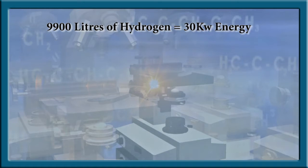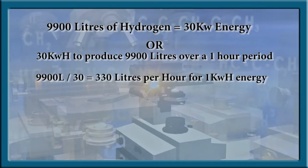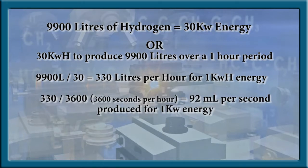With an energy efficiency of 1 to 1, or 100%, it would require 30 kilowatt-hours to produce 9900 liters of hydrogen. Therefore, divide 9900 by 30, and we conclude that 1 kilowatt-hour of input energy would produce 330 liters over that 1 hour of constant run-time. Divide the 330 liters produced per hour into quantity per second, and we arrive at 92 milliliters of hydrogen produced per second from a constant 1 kilowatt input energy and a 100% efficiency.